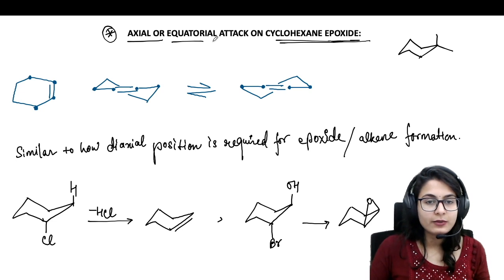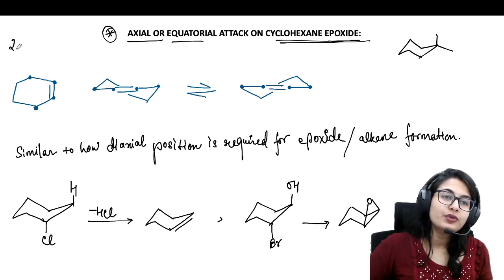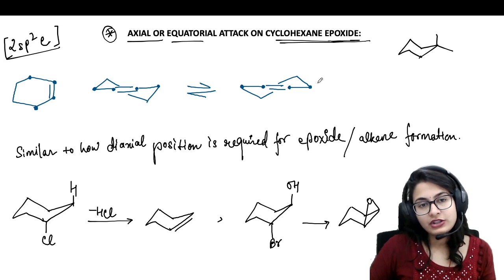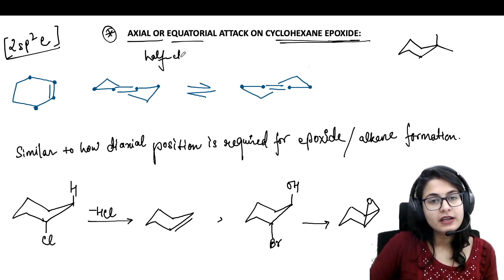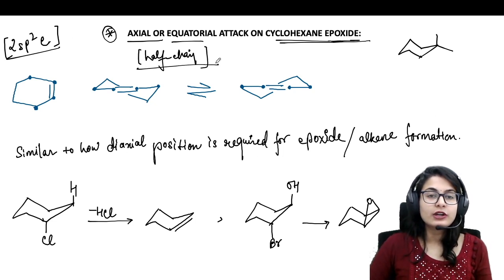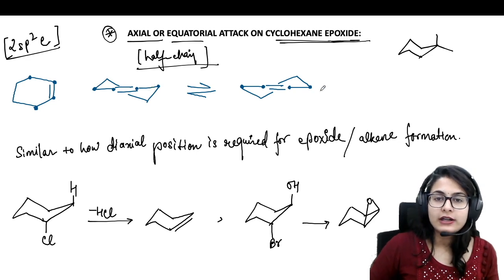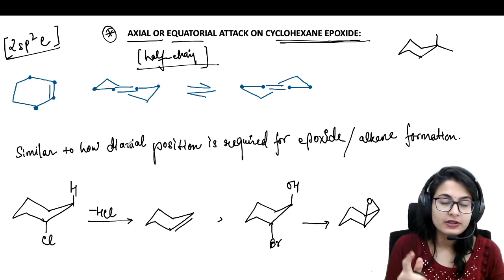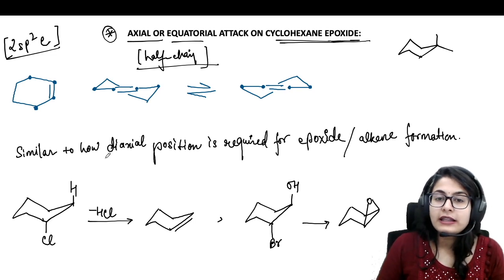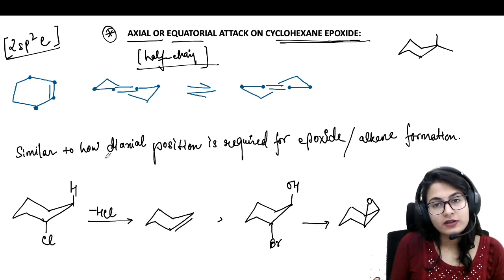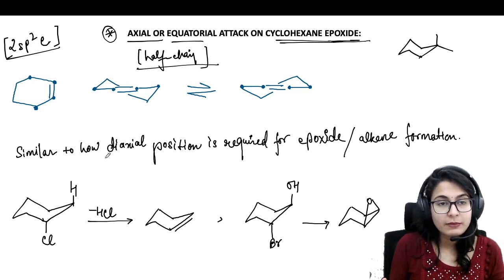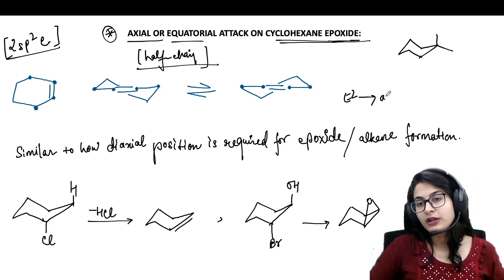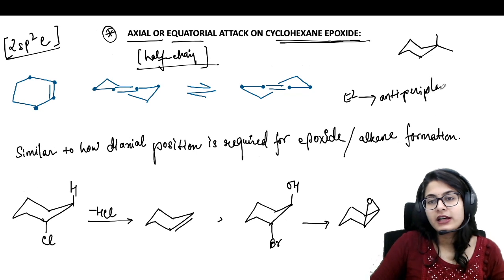Both epoxidation and ring-opening on cyclohexane will require stereochemical analysis. When you have sp2 carbons — two sp2 carbons — your conformation is no longer a chair; it is called a half-chair. You need to understand how stereochemistry is maintained throughout the reaction. For E2 elimination, you must remember the anti-periplanar condition is required: the two leaving groups must be at 180° to each other.